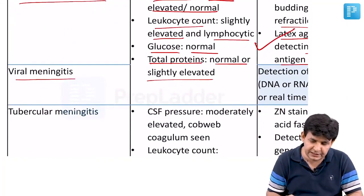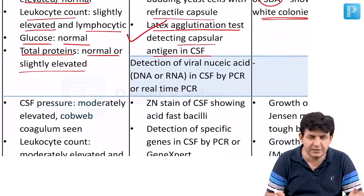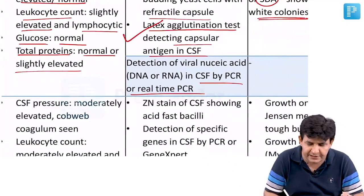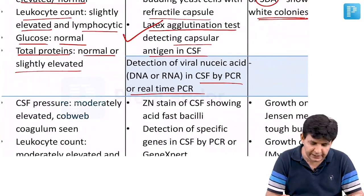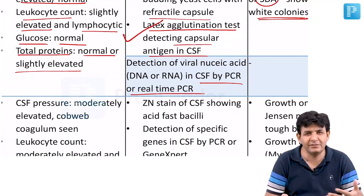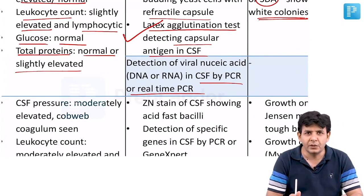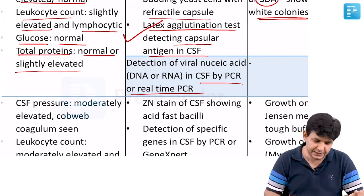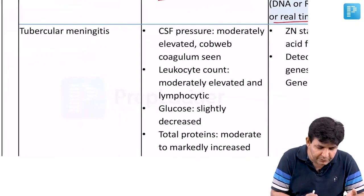Regarding viral meningitis, CSF values for glucose and other parameters are similar to fungal meningitis. Nowadays, the best investigation is real-time RT-PCR, which provides rapid diagnosis - just as RT-PCR is the investigation of choice for COVID-19.